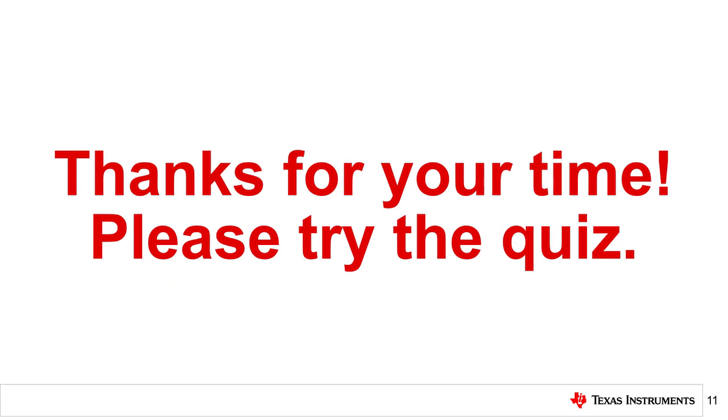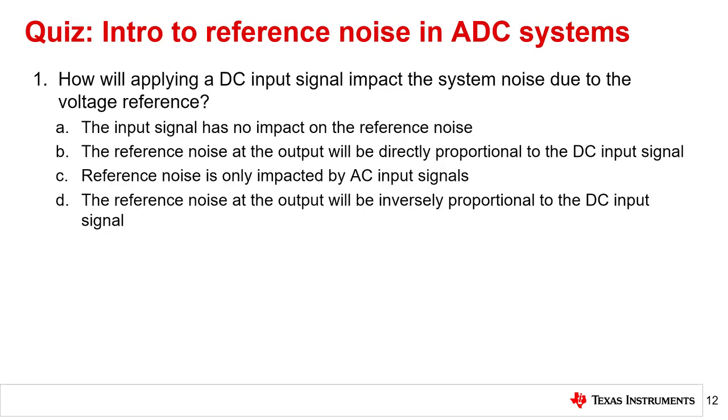Please try the quiz to check your understanding of this video's content. Question 1: How will applying a DC input signal impact the system noise due to the voltage reference? The correct answer is B. The reference noise at the output will be directly proportional to the DC input signal.